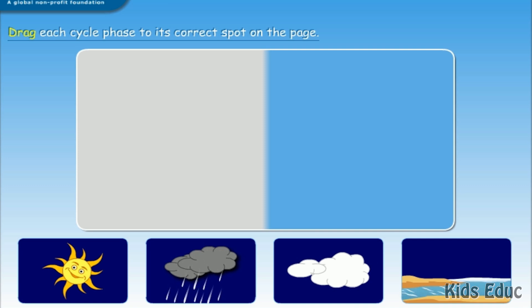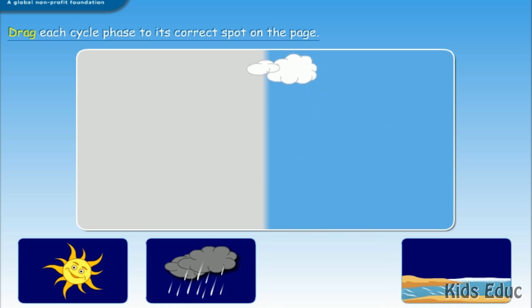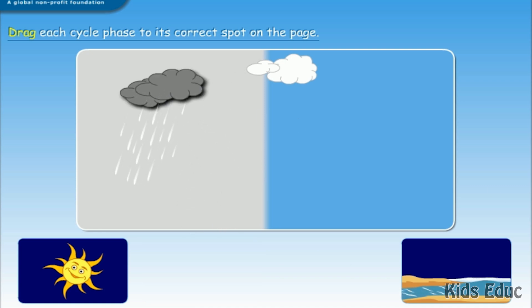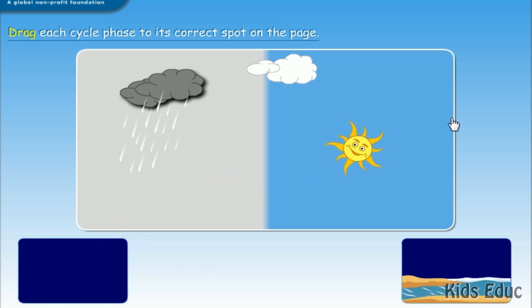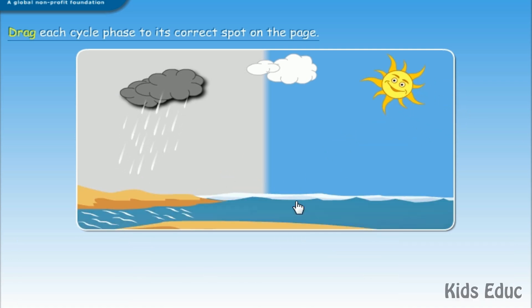Click to drag each image to complete the cycle. You will be able to move them around until the cycle is completed correctly. You will be notified once you completed it correctly. You got it!